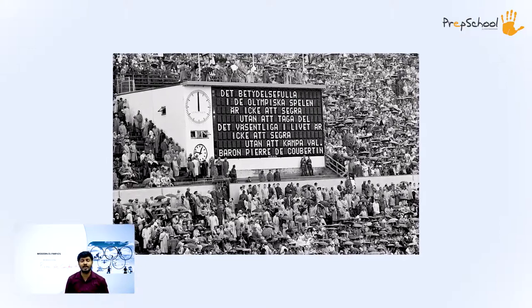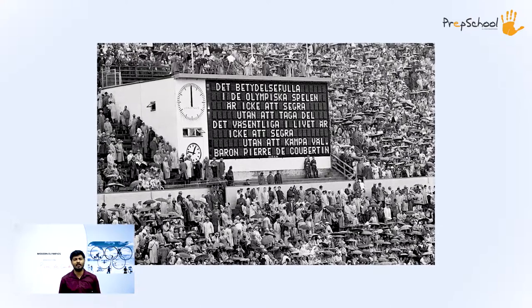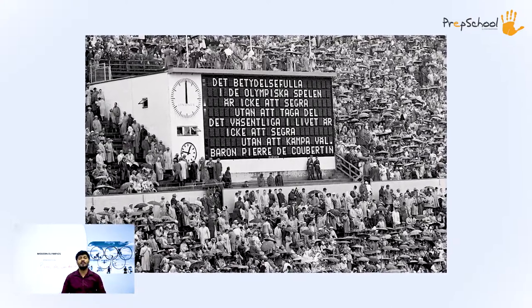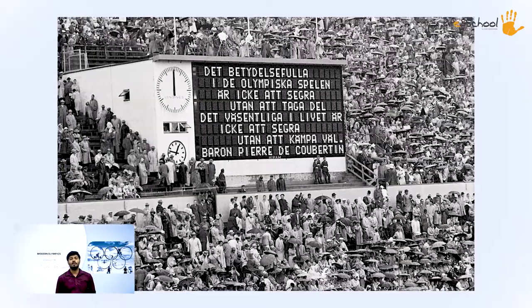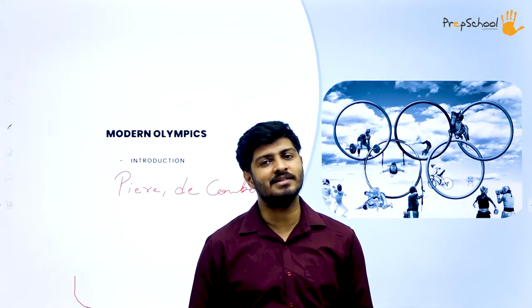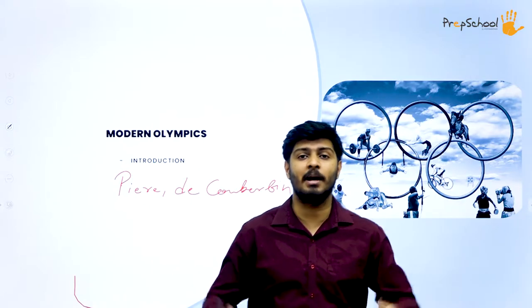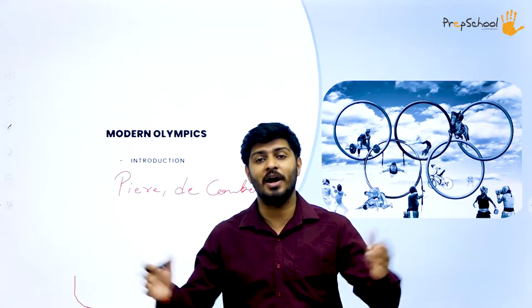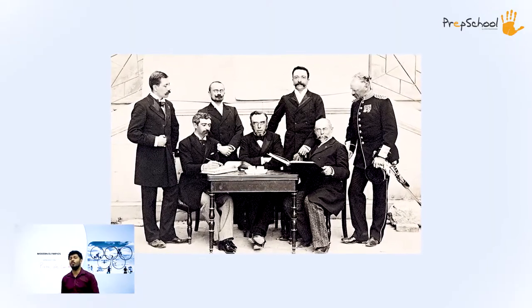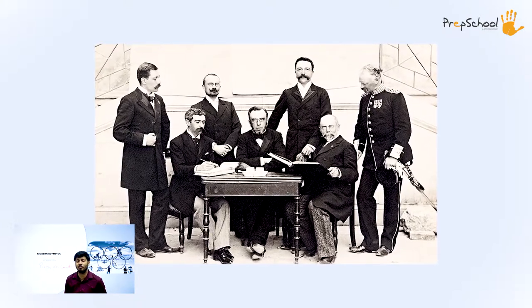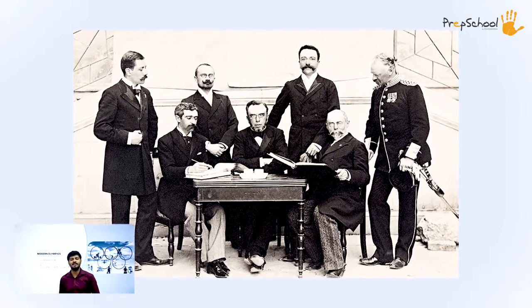After studying politics, Coubertin came to know about the different problems existing in national and international relationships. So he started thinking about how we could resolve these problems. That's when Coubertin thought about the Olympic Games — he thought that if we could conduct an event where all countries are participating together, sharing the love towards sportsmanship, the inter-country relationship would develop, leading to a more peaceful world. He started thinking about this 10 years before it could actually happen.